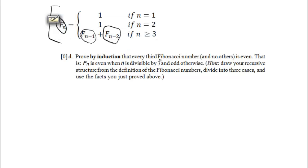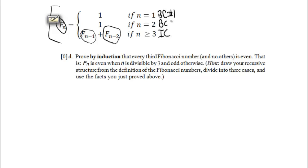The case n greater than or equal to 3 has recursive appearances, making it an inductive case. The cases n equals 1 and n equals 2 have no recursive appearances, so these are both base cases — base case number one and base case number two. Knowing the recursive structure gives us the structure of our proof.